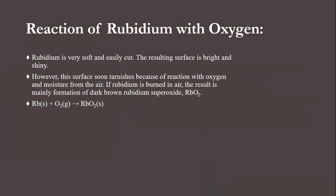Now we will look at some reactions of rubidium with other elements. First, the reaction of rubidium with oxygen. Rubidium is a very soft and easily cut element. The freshly cut surface is bright and shiny; however, it soon tarnishes due to reaction with oxygen and moisture from the air. If rubidium is burned in air, the result is mainly the formation of rubidium superoxide. The chemical formula for rubidium superoxide is shown here.